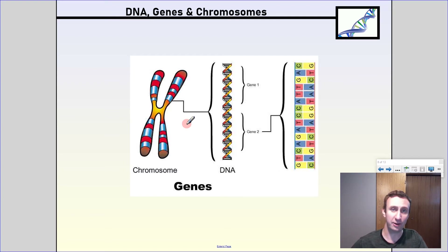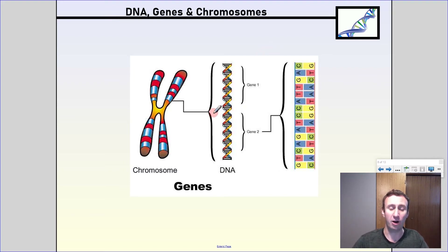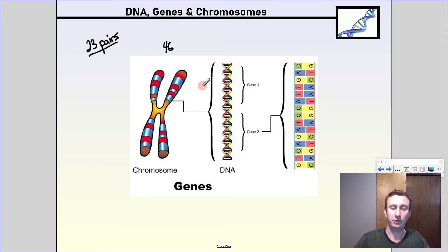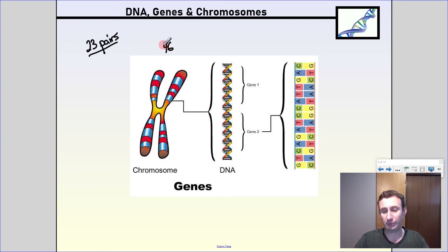Packets of DNA are all packaged together in what's called a chromosome. Humans have 46 chromosomes — that's 23 pairs. So essentially I have 23 pairs of chromosomes, which gives 46 in total because 23 times 2 is 46.